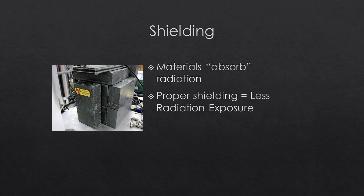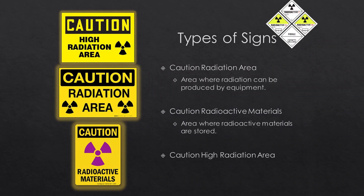Radiation use will be labeled on doors, work areas, and storage areas. Most research laboratories work with very low levels of activity. Here are some signs you may see in your workplace. The first is 'Caution Radiation Area,' posted in areas where radiation can be produced by equipment such as x-ray tubes, CT scanners, and similar machines — when not energized, they are not producing radiation.